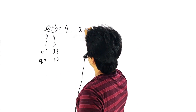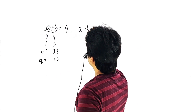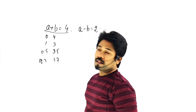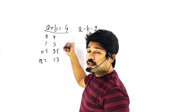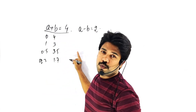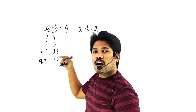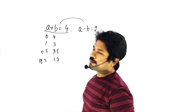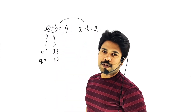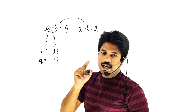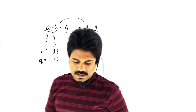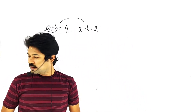Now if a minus b is equal to 2, and we also have a plus b is equal to 4, with these two conditions we can limit the values of a and b. Let us see.